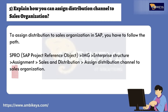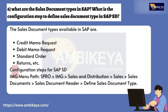Question number five: Explain how you can assign a Distribution Channel to a Sales Organization. To assign a distribution channel to a sales organization in SAP, follow the path: SPRO > SAP Project Reference Object > IMG > Enterprise Structure > Assignment > Sales and Distribution > Assign Distribution Channel to Sales Organization.